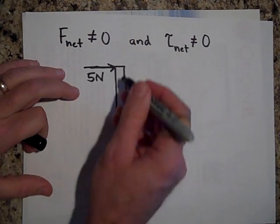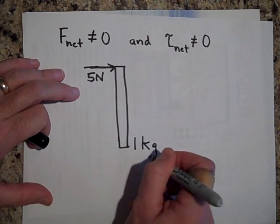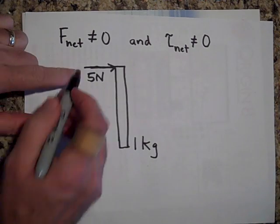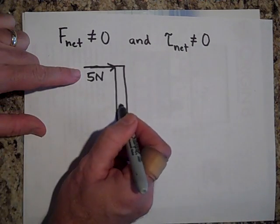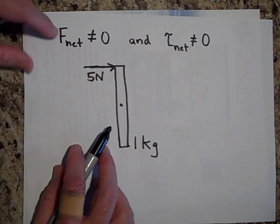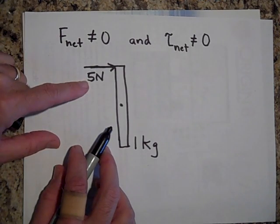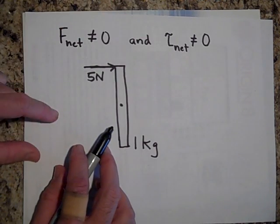Let's call this one kilogram. Here's a stick that's one kilogram. And you put a force off center. So here's the center of mass of it. You put a force off center and there's now a net force. There is a net force of five newtons. And there is also a net torque.